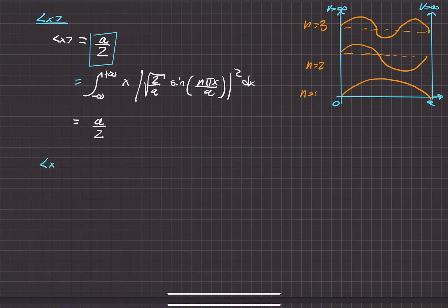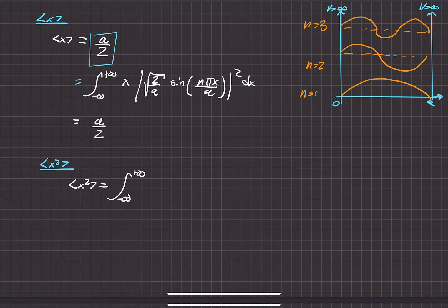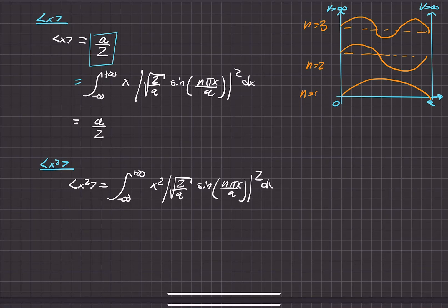The next physical property is the expectation value of x squared. This one doesn't have a great physics shortcut, so we set up the integral with x squared as the operator and our wave function squared with respect to x. I would recommend using x squared as the 'y' for integration by parts and solving that way, or using a calculator.